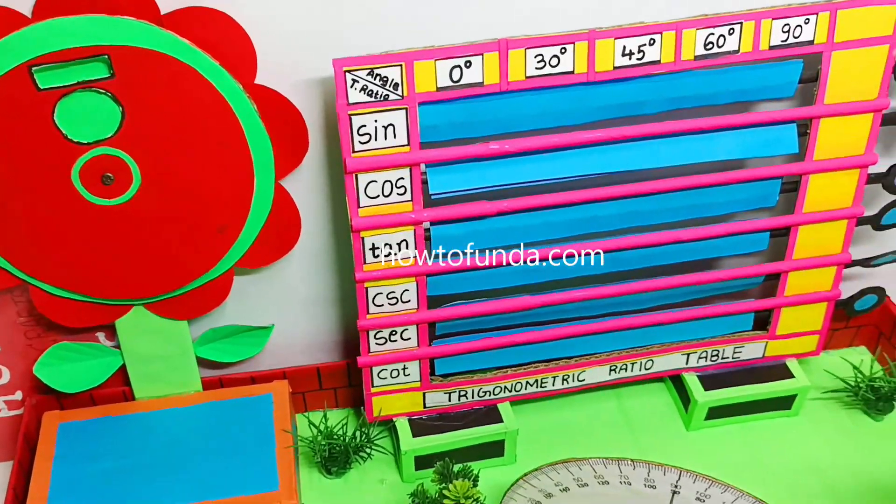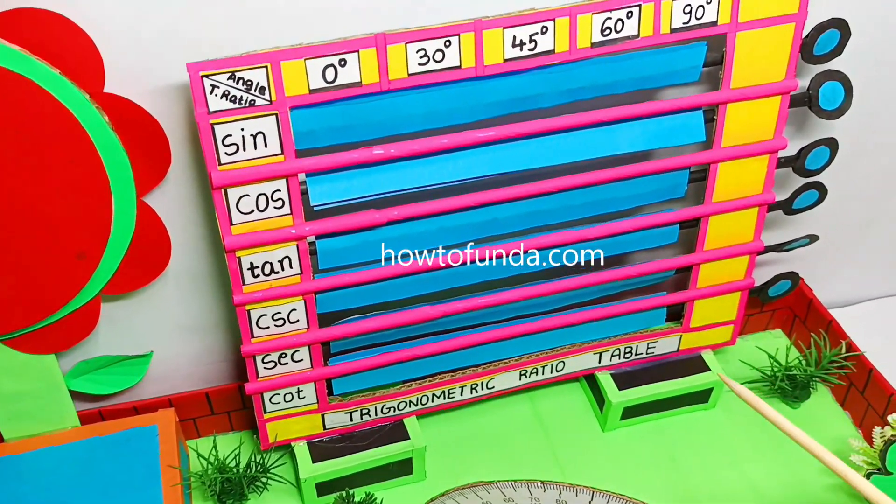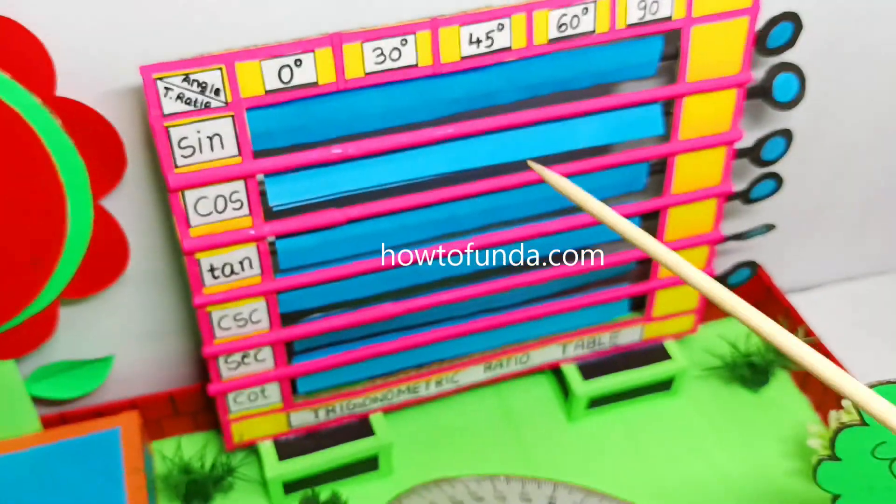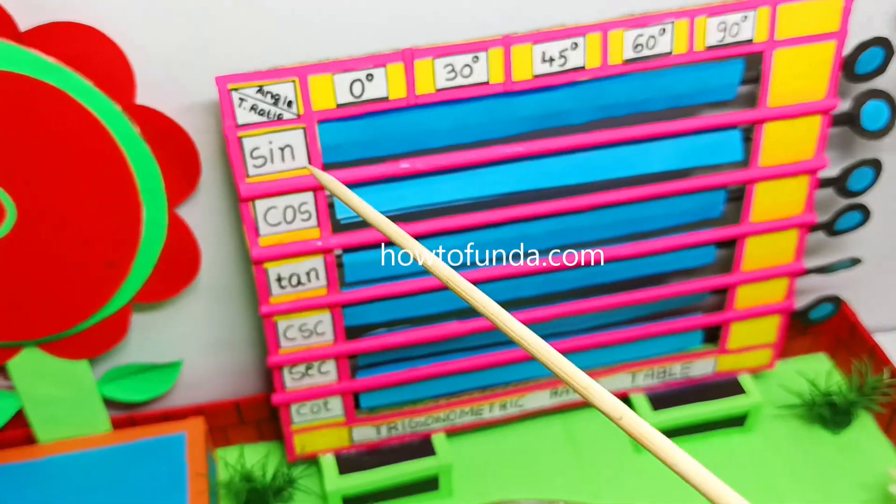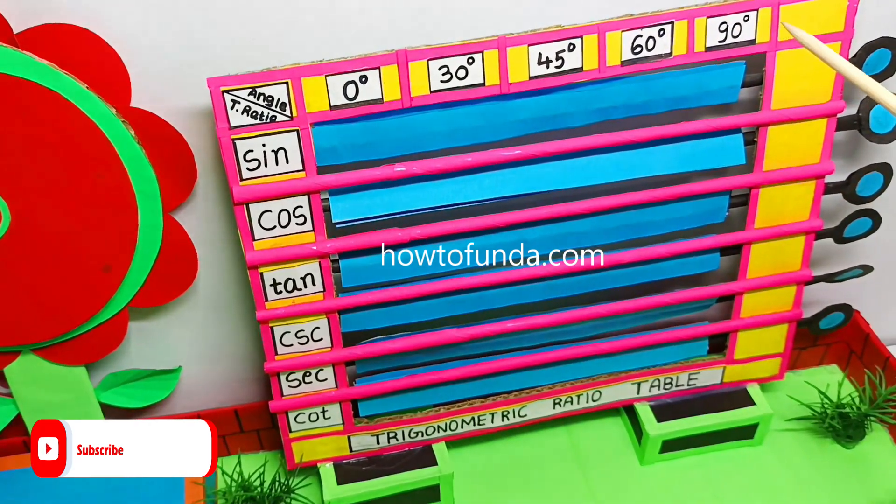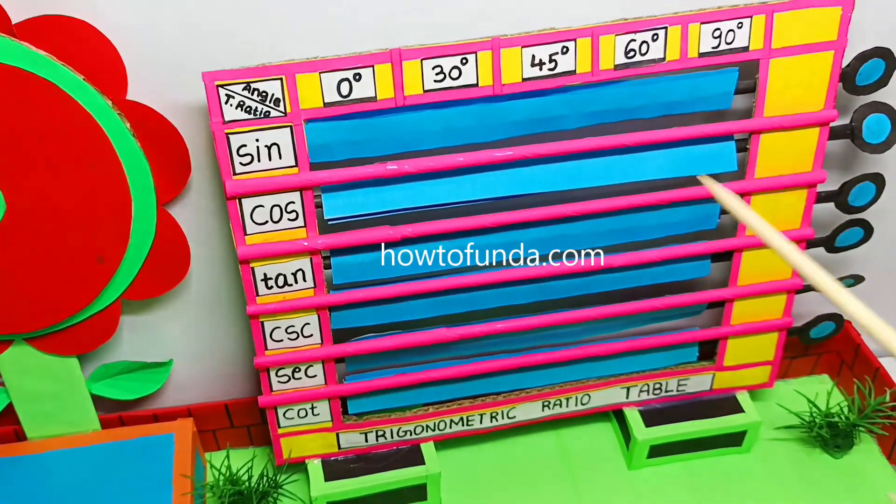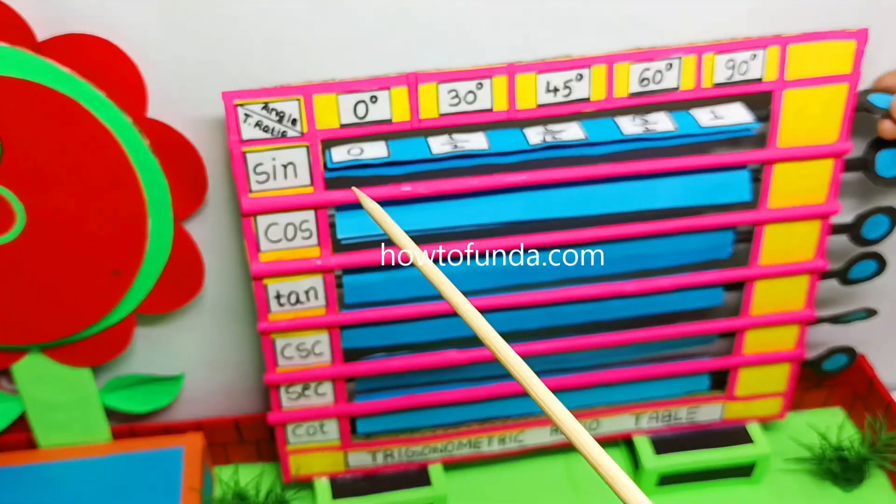We also depicted one more item related to trigonometry, the trigonometric ratio table. Here we have put the table in this format: when sin θ becomes 0 degree, 30 degree, 45 degree, 60 degree, 90 degree, what would be the value. That is what we wanted to depict here for sin θ.